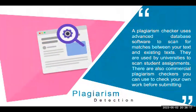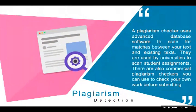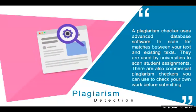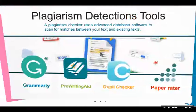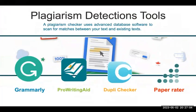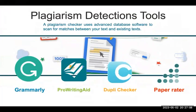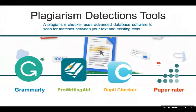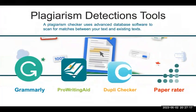A million dollar question: how to detect plagiarism, and what algorithm is being used? Normally a plagiarism checker uses advanced database software to scan for matches between your text and existing text. They're used by universities to scan student assignments, and there are also commercial plagiarism checkers you can use to check your work before submitting. What kind of software is available to detect plagiarism? There are plenty of tools available online.